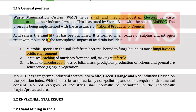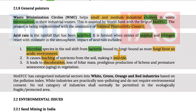Acid rain is rainfall that has been acidified, formed when oxides of sulfur and nitrogen react with moisture in the atmosphere. Impacts of acid rain include a shift in microbial species in soil from bacteria-bound to fungi-bound communities, as fungi favor an acidic environment. It also causes leaching of nutrients from soil, making it infertile.